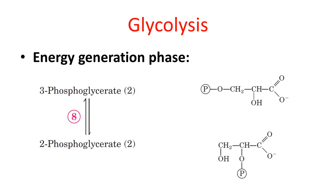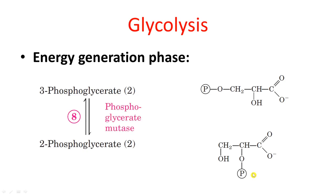In step 8, 3-phosphoglycerate is converted to 2-phosphoglycerate. The phosphate group simply changes its position — from the third carbon to the second carbon of the glycerate compound. Since there is movement of a functional group from one position to another, the enzyme involved is phosphoglycerate mutase.